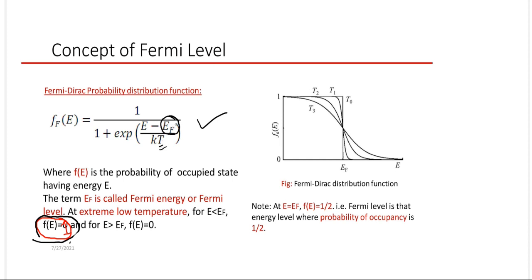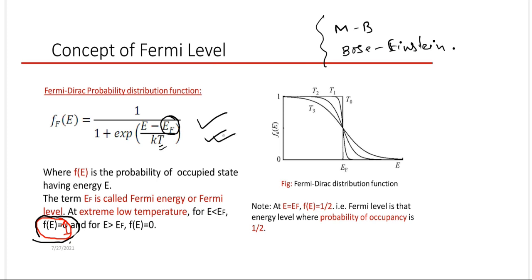Unlike the Fermi-Dirac distribution, there are other probability distribution functions such as the Maxwell-Boltzmann distribution function and the Bose-Einstein distribution function. They are also different probability distribution functions, but for semiconductors the Fermi-Dirac distribution function gives the best description of the probability of occupation of charge carriers.